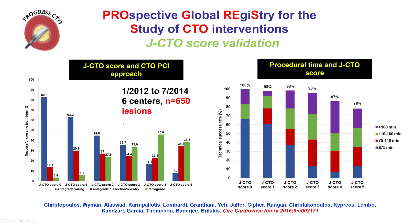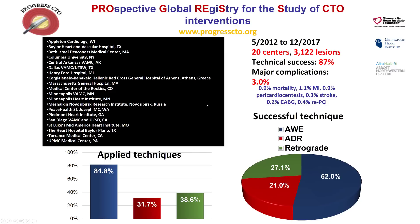People sometimes ask why they need to know antegrade dissection reentry. These techniques are important for achieving success, especially in more complex lesions. A JCTO score from the Progress Registry shows that with increasing score, there is a much higher need for using the retrograde approach or antegrade dissection reentry. From the overall Progress CTO registry with more than 3,000 cases, although in half the cases wire escalation works, in approximately a quarter of cases each, retrograde or antegrade dissection reentry are going to be the final successful strategies.